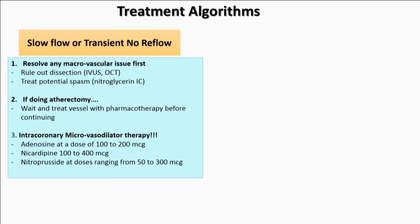For slow flow or transient reflow: rule out a macrovascular problem and treat it first. If it's a dissection, figure that out and treat it. If it's spasm, give nitroglycerin. If you're doing atherectomy, don't be in a rush — train fellows to be gentle and wait between runs. Give appropriate pharmacotherapy. Intracoronary microvasodilator therapy is very important: adenosine, nicardipine, or nitroprusside, given according to the patient's heart rate and blood pressure.